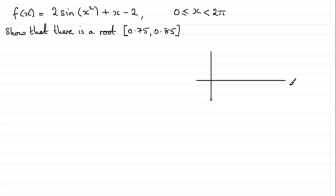if you had your graph, let's say we were plotting y equals f of x, and we've got our interval here between 0.75 and 0.85, the graph could look maybe something like this, going from positive to negative, and this would be our root.